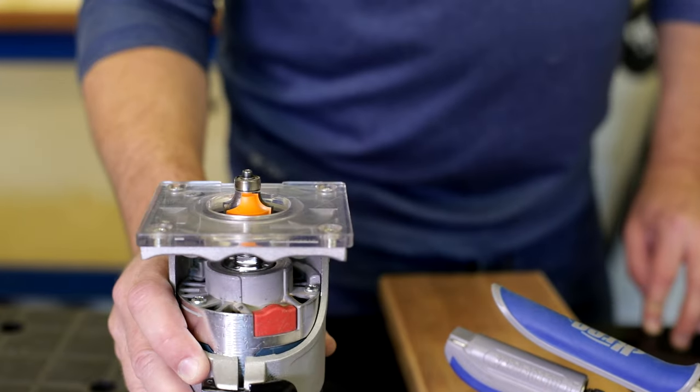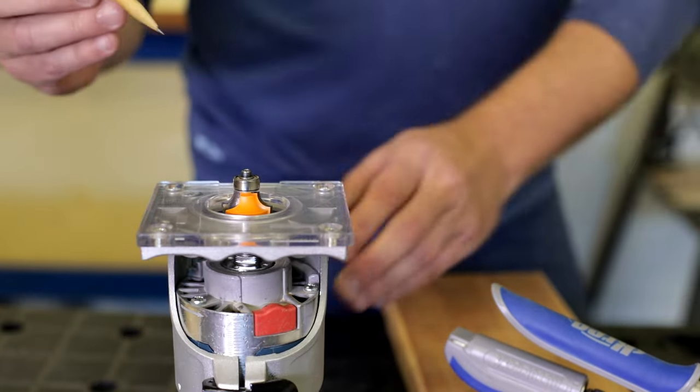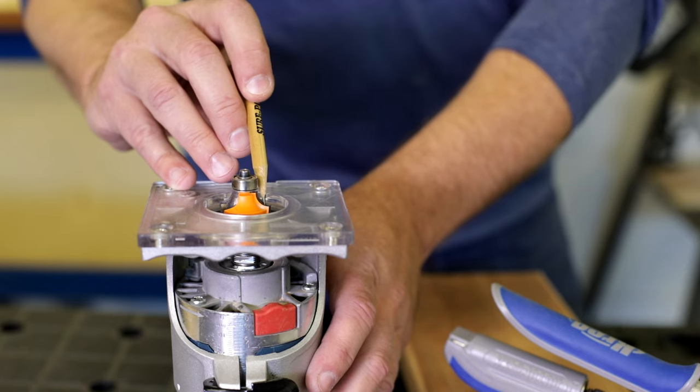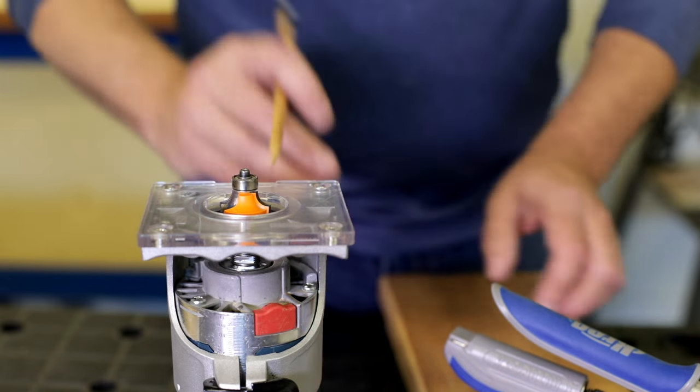You can take your projects to the next level by adding decorative edge profiles with a router. Here are just a few profiles that you can make with one router bit: a quarter inch round over bit.